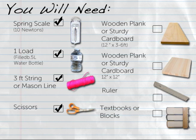You will also need the following materials specific to the inclined plane station. For the long board, one wooden plank or sturdy piece of cardboard that is 12 inches wide and three to six feet long. For the short board, a second plank or board of the same material that is 12 inches wide and 12 inches long, one ruler, and enough textbooks or blocks to create two six inch stacks.